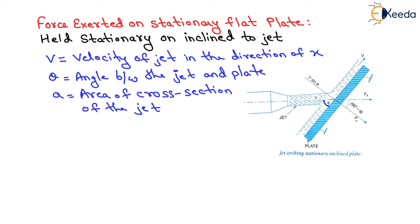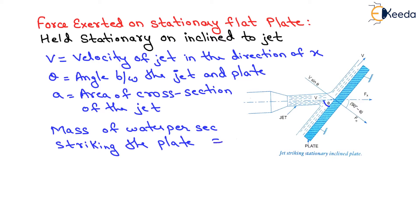The mass of water per second striking the flat plate is rho into A into V. Now if the flat plate is smooth, and if it is assumed that there is no loss of energy due to impact of the jet, then the jet will move over the plate after striking with a velocity equal to the initial velocity, that is with velocity V.